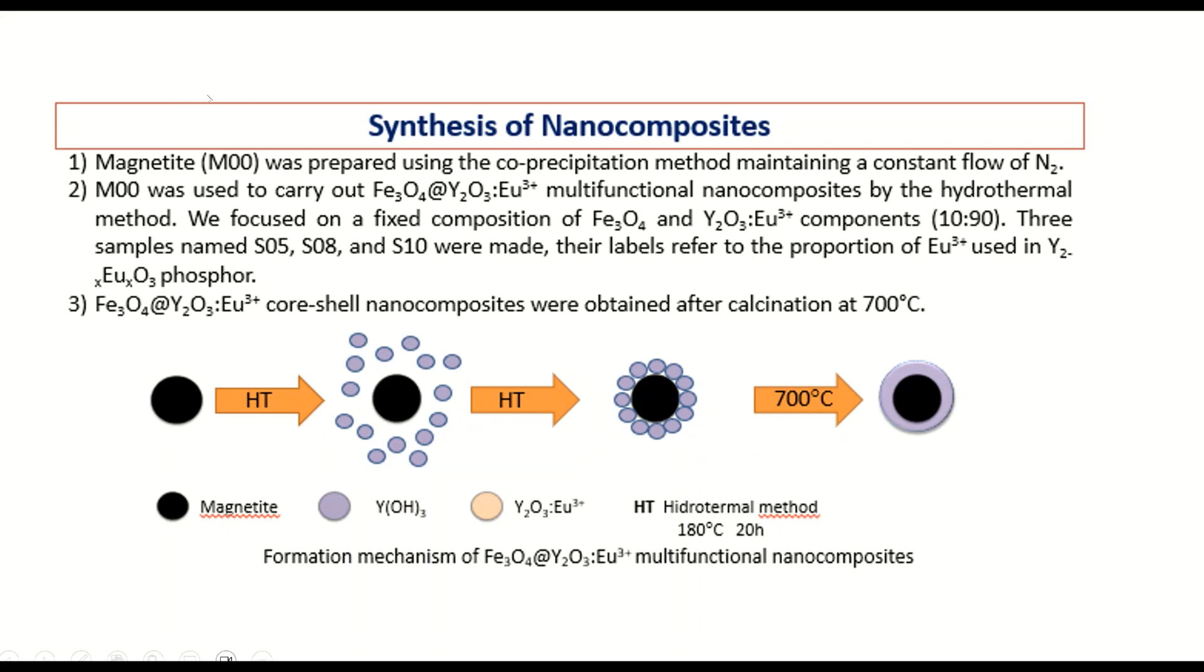We fixed the composition of magnetite at 10% and we only modified the quantity of europium in yttrium oxide. We used 5, 8 and 10% of europium in this phosphor.